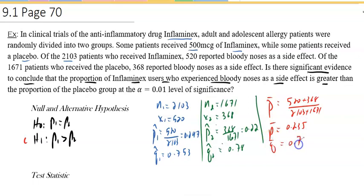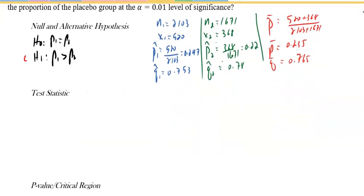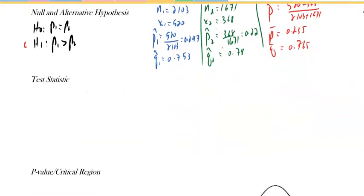q-bar is 0.765. Now they want us to do the test statistic, z equals p1-hat minus p2-hat minus this, which is going to be 0 because if you subtract those with the assumption that they're equal.